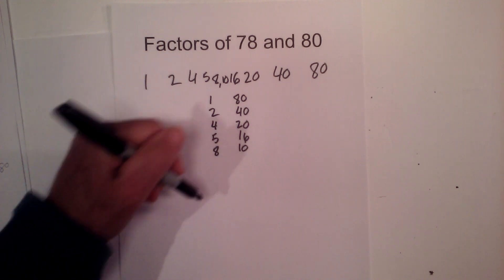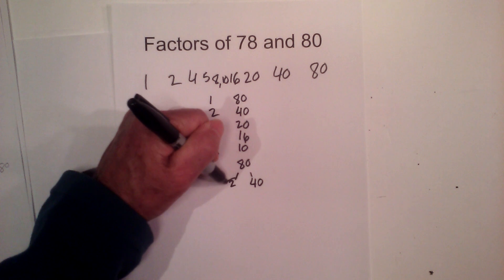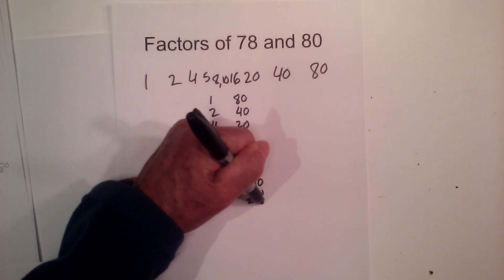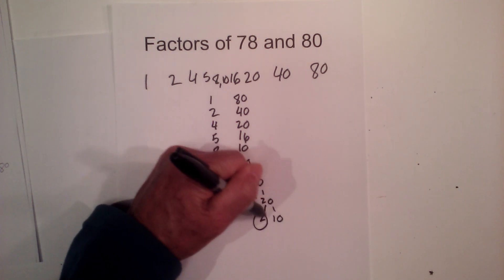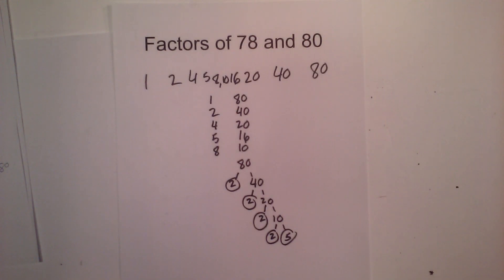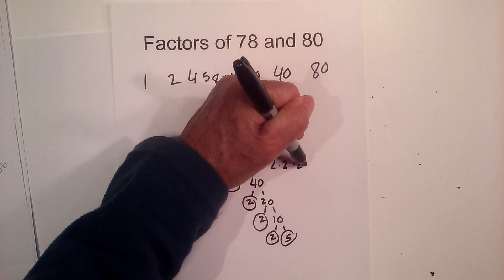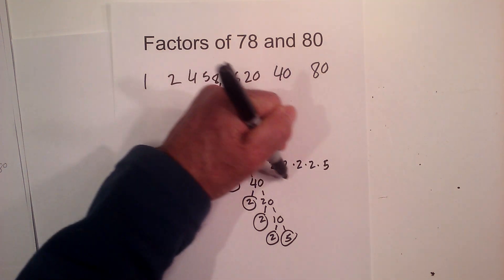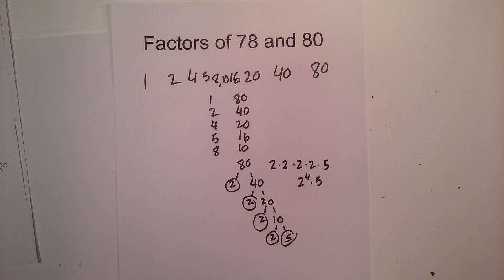Now let's complete a factor tree for 80: 2 times 40 — circle the 2 — then 2 times 20 — circle the 2 — then 2 times 10, then 2 times 5 — circle the 2 and the 5 because they are prime. So it's 2 times 2 times 2 times 2 times 5, or 2 to the 4th times 5.